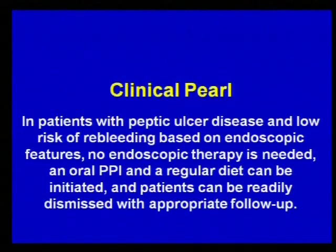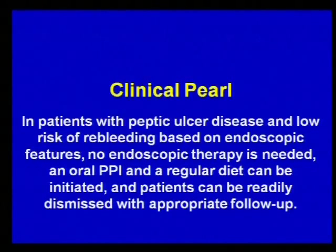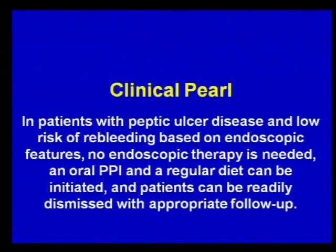All of this information came from the ACG Practice Guideline 2012. The clinical pearl here is that in patients with peptic ulcer disease and low risk of re-bleeding based on endoscopic features, no endoscopic therapy is needed. An oral PPI and a regular diet can be initiated, and patients can be readily dismissed with appropriate follow-up.